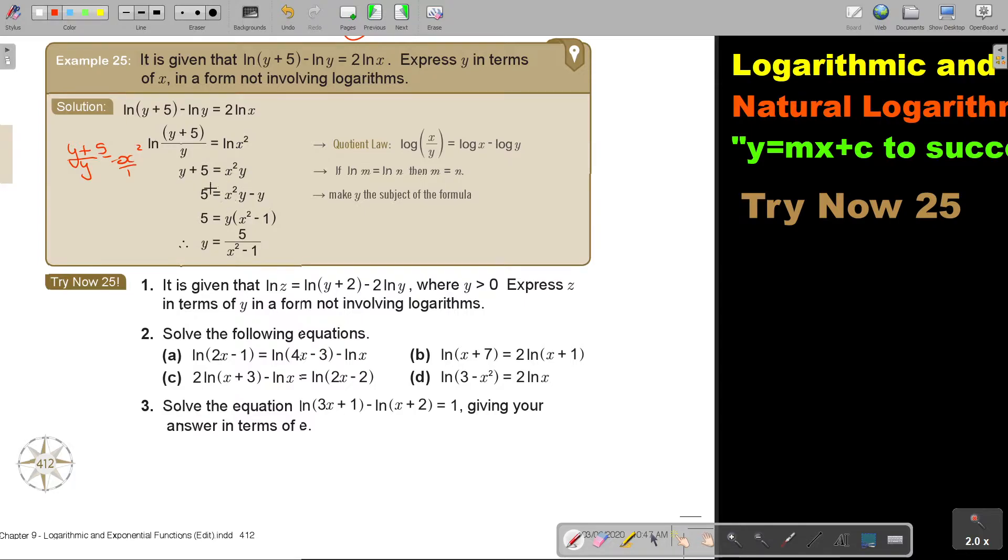And then, now there's two terms with y. So get the terms with y first on the same side. Then take y out as a common factor. And then it's x squared minus 1. And then I divide by this bracket, both sides, and there it is in terms of y, without a log or a ln.